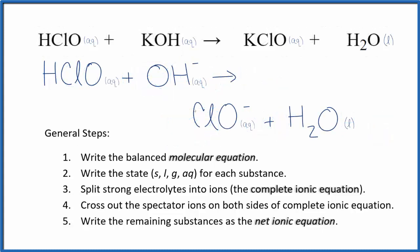So this is the balanced net ionic equation for hypochlorous acid plus potassium hydroxide. You'll note that charge is conserved. We have a one minus charge over here in the reactants, and we have one minus in the products. If you count the atoms up, they're balanced as well.